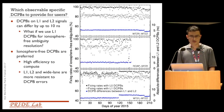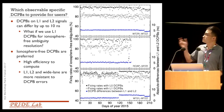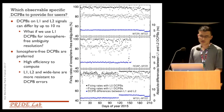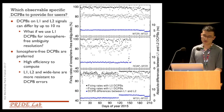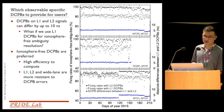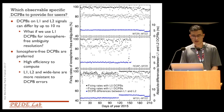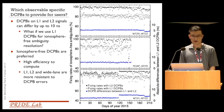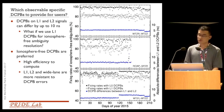Regarding what observable-specific DCPB to provide for users: using R1 DCPB for GLONASS ionosphere-free ambiguity resolution clearly deteriorates the fixing rate. When using ionosphere-free DCPB, the ambiguity resolution fixing rate is nearly 100%, but when using R1 DCPB, it is only about 88%. Therefore, ionosphere-free DCPB should be provided for ionosphere-free ambiguity resolution because of its high efficiency, and because R1, R2, and wide-lane are more resistant to DCPB errors.